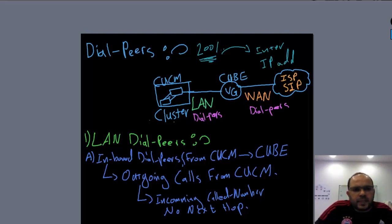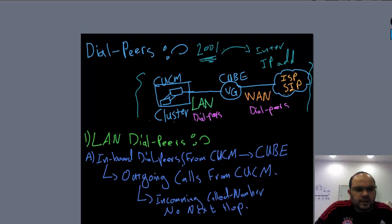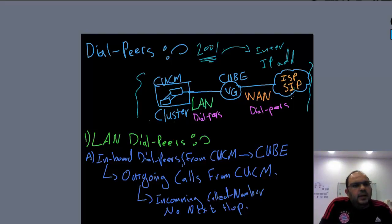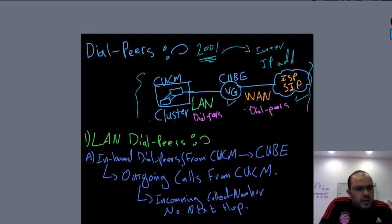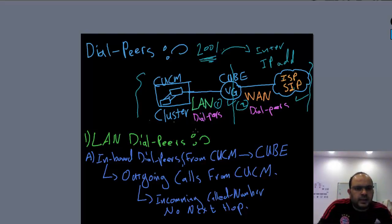Let's go deeper about dial peers. I drew a diagram — this is very important to understand, because it will build all information based on this design. I have an ISP cloud which is a SIP server, I have my voice gateway which is the Cisco Unified Border Element (CUBE), and I have a CUCM cluster. I divided this design into two parts: the LAN side and the WAN side. There are LAN dial peers and WAN dial peers.